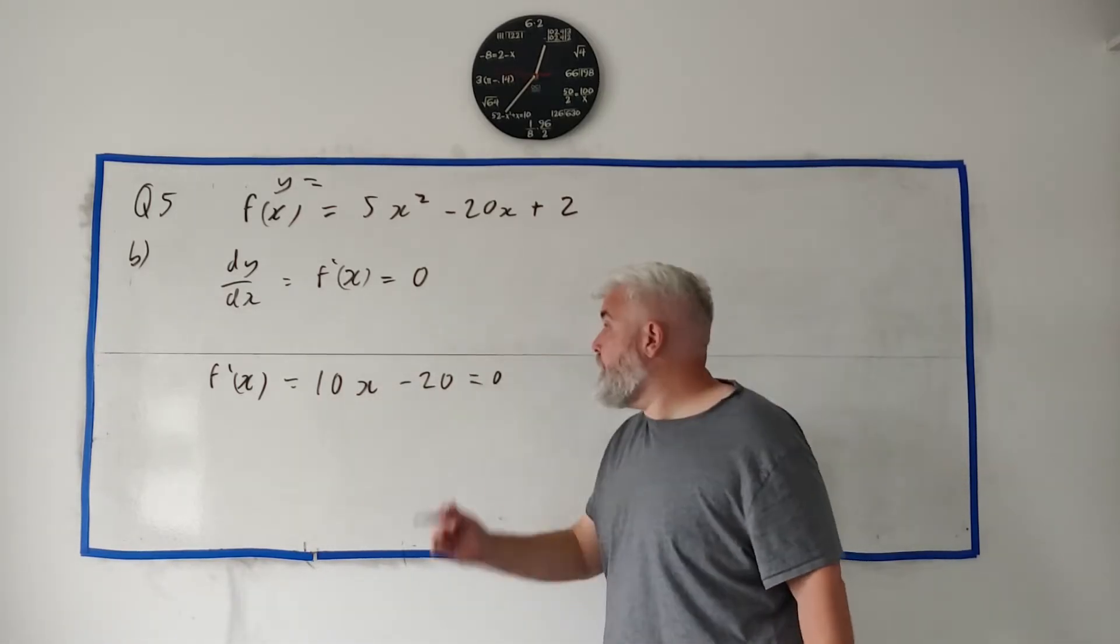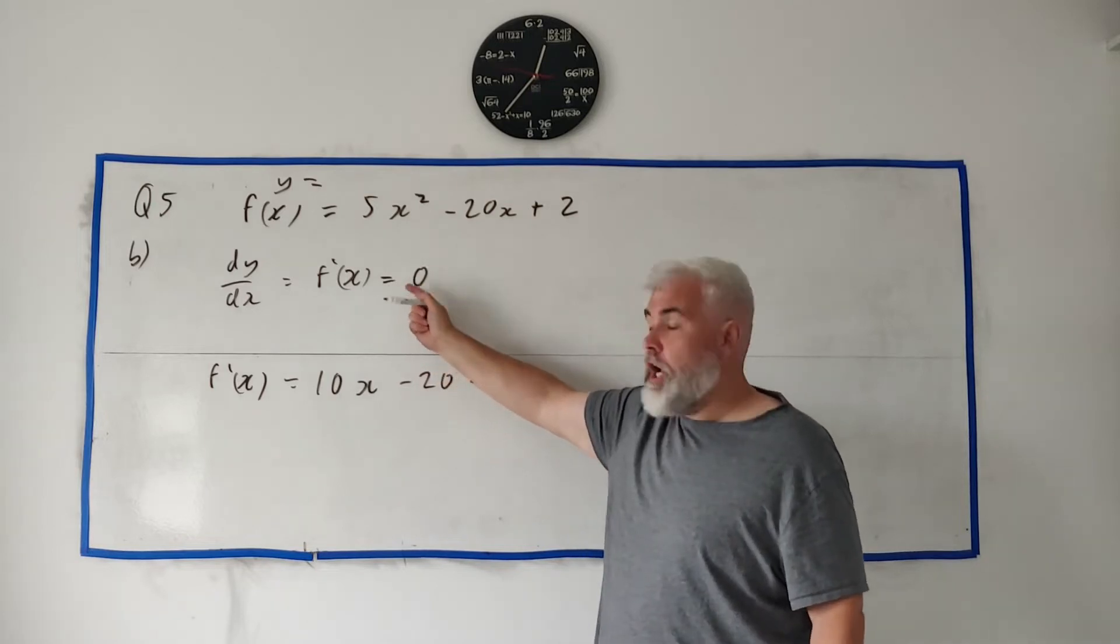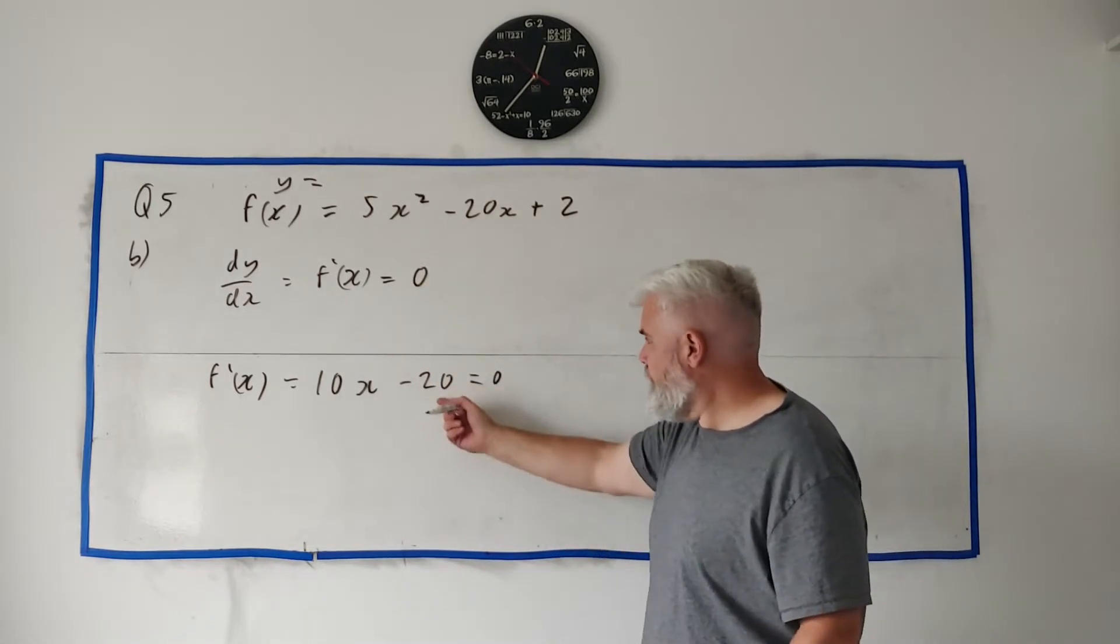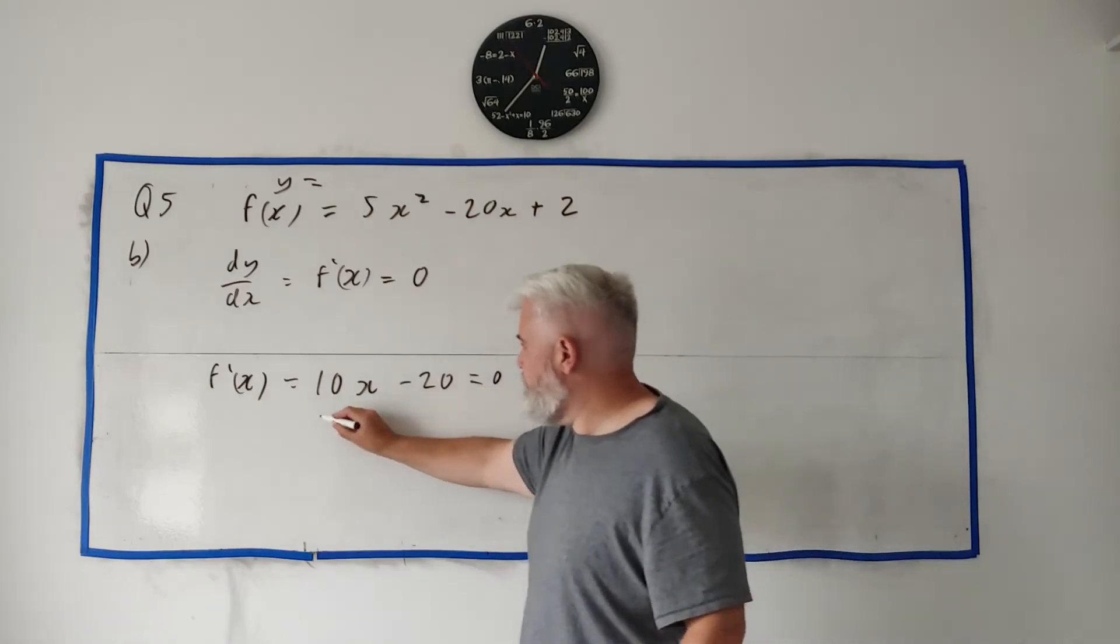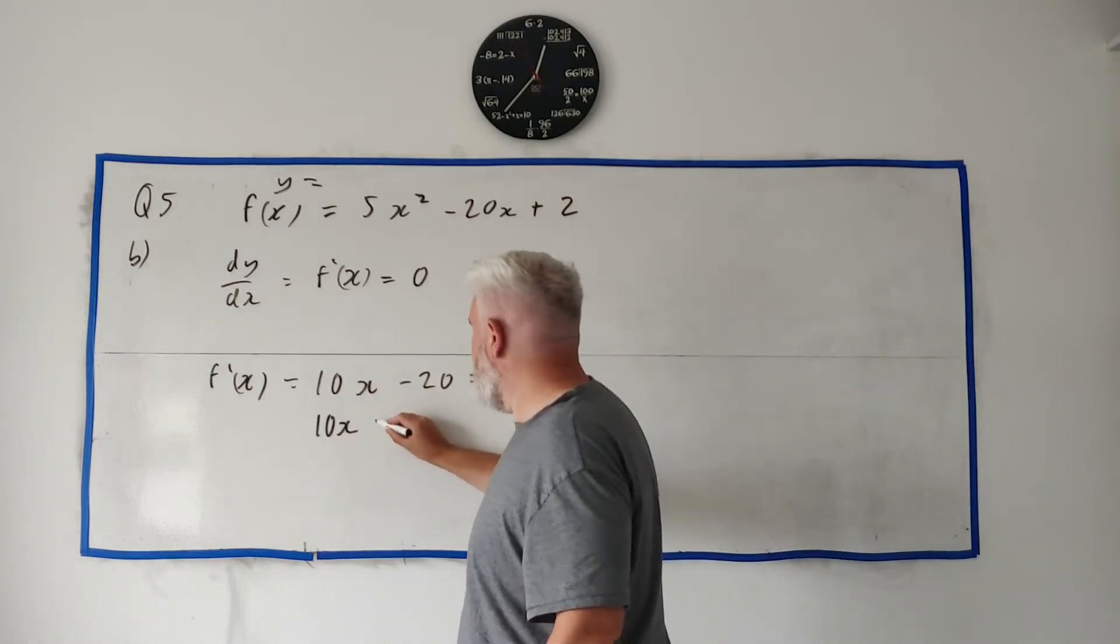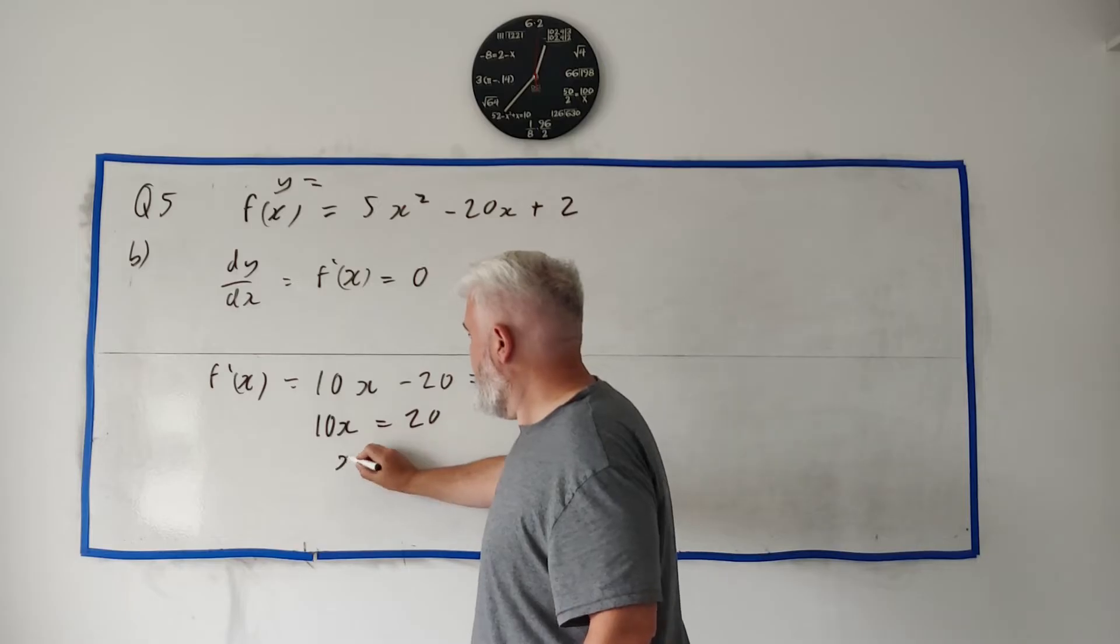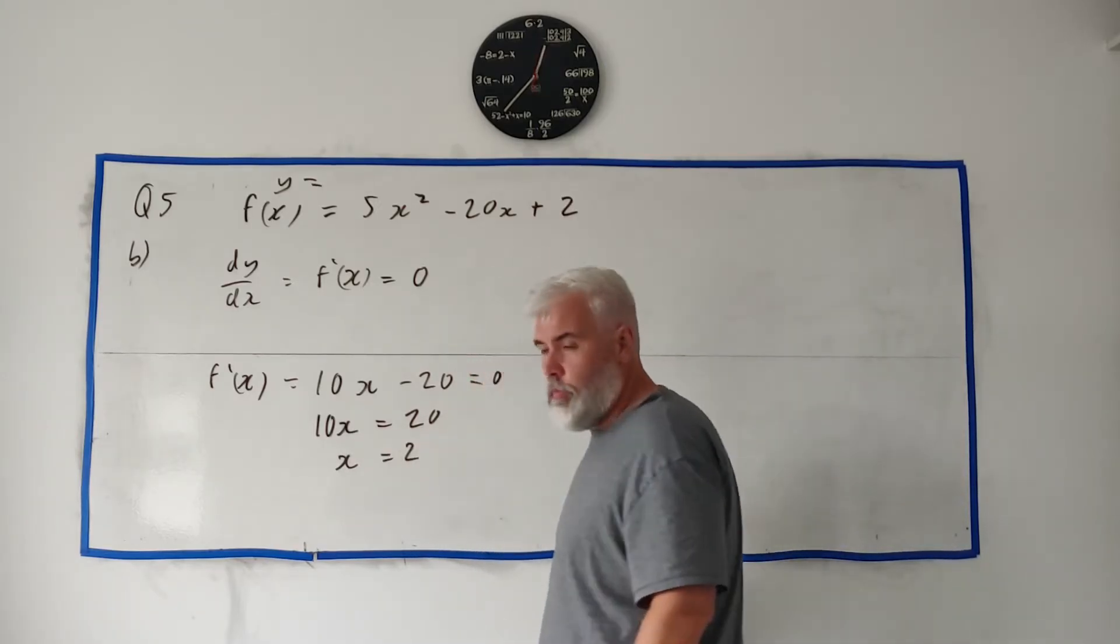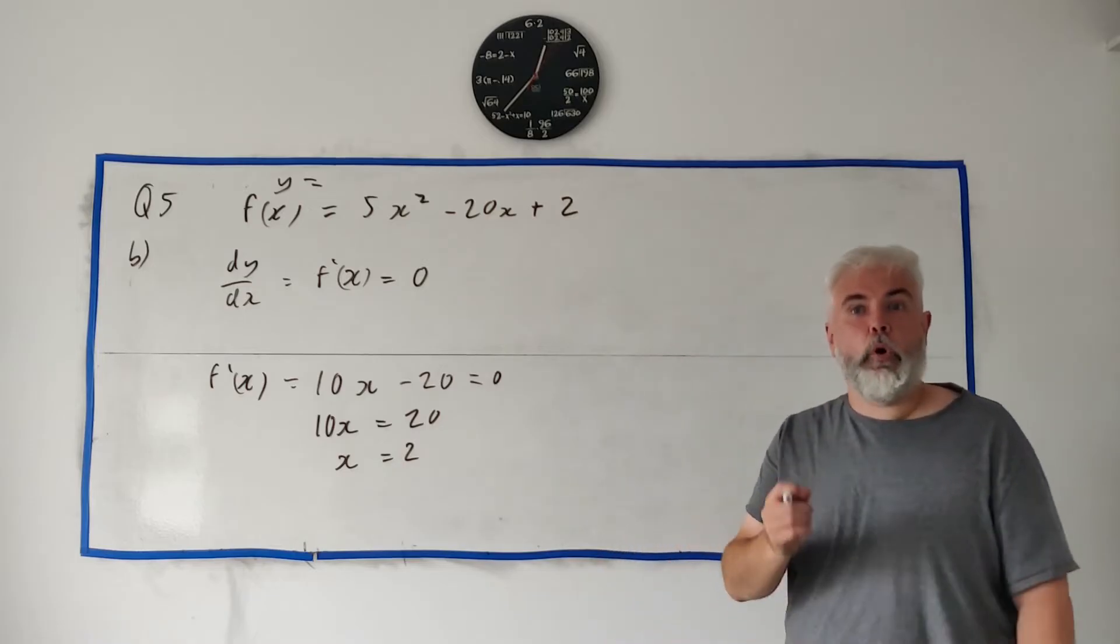But this equals 0 because of the minimum, we know this equals zero because we're looking for the minimum point. So we solve this: add 20 to both sides we get 10x is equal to 20, and divide both sides by 10 we get x is equal to 2.